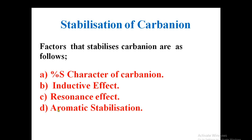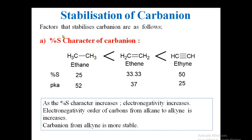We have to see all these effects in detail one by one. For the first effect — percentage of S character — I have taken some examples. We have ethane, ethene, and ethyne. The percentage of S character of carbons in ethane is 25%, in ethene it is 33.33%, and in ethyne it is 50%. Their corresponding pKa values are 52, 37, and 25.